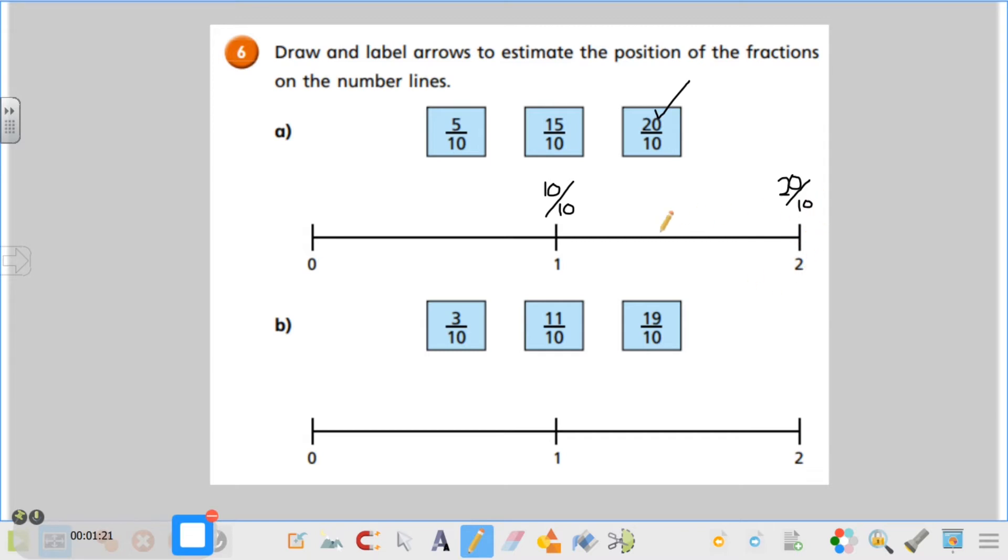So 20 tenths is the same as 2, so we can tick off our 20 tenths because that is exactly the same. We now know that 10 tenths is here and 20 tenths is here, and we need to find 5 tenths somewhere and somewhere to put 15 tenths.